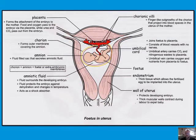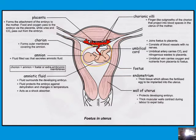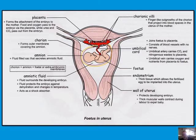The wall of the uterus protects the developing embryo — its thick muscular walls contract during labor to expel the baby. The endometrium is the thick tissue that allows the fertilized egg to be implanted. The umbilical cord joins the fetus to the placenta and consists of blood vessels with no nerves — this is important because if pain were experienced through this process the baby would go into serious distress. The umbilical artery carries CO2 and nitrogenous waste to the placenta.